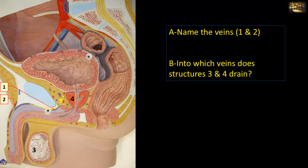Regarding structures 3 and 4 and the veins that drain them: structure 3 is the testis, drained by the testicular veins. The left testicular vein drains into the left renal vein, while the right testicular vein drains directly into the inferior vena cava. The testicular veins drain into the abdomen because the testis develops in the abdomen and descends into the scrotum dragging its blood supply with it. Regarding the prostate gland, it is drained by a prostatic venous plexus surrounding the prostate, which drains into the internal iliac vein.